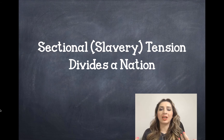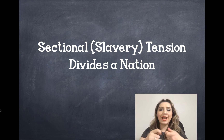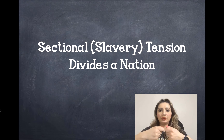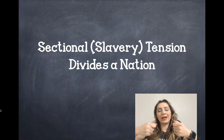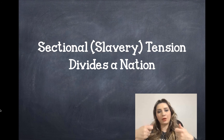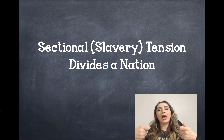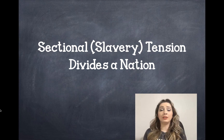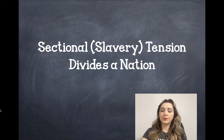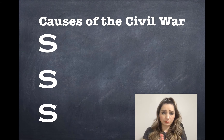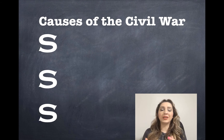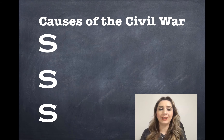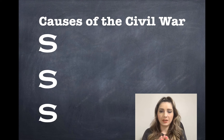When we talk about tension, I like to think about a rubber band and how slowly over time things keep happening, to the point where that tension is growing, and eventually we know it's going to lead to civil war. So what are our three causes of the civil war? I like to teach them as the Three S's.